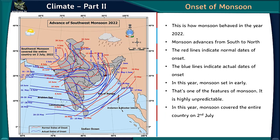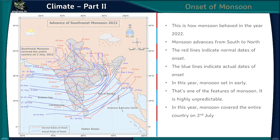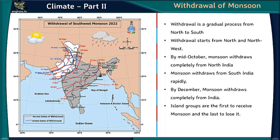In the year 2022, monsoon set in early — covering the entire country by July 2nd — illustrating that monsoon is highly unpredictable. On the map, red lines indicate normal onset dates and blue lines indicate actual dates. Withdrawal is a gradual process from north to south, starting from north and northwest. By mid-October, monsoon withdraws completely from north India, and by December it withdraws completely from the mainland. The Andaman and Nicobar Islands are the first to receive monsoon and the last to lose it.